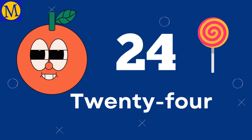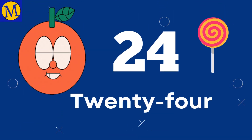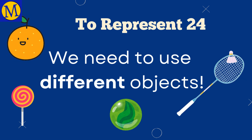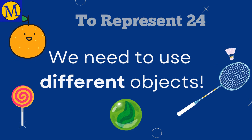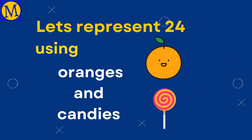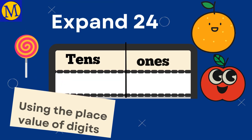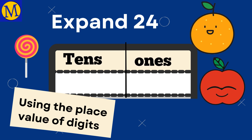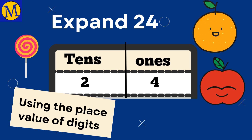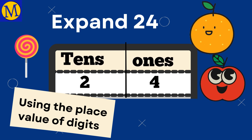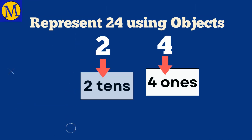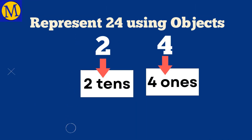Let's take number 24. To represent 24, we need to use different objects. Now, expand the number using the place value of its digits. Here, 4 is in the 1's place and 2 is in the 10's place. So there are two 10's and four 1's.